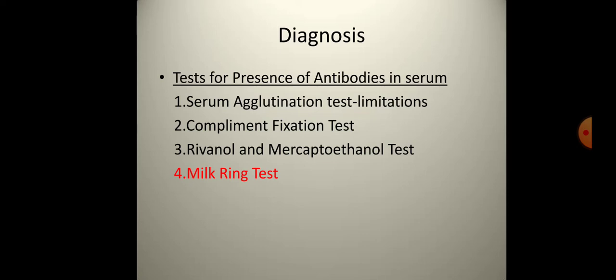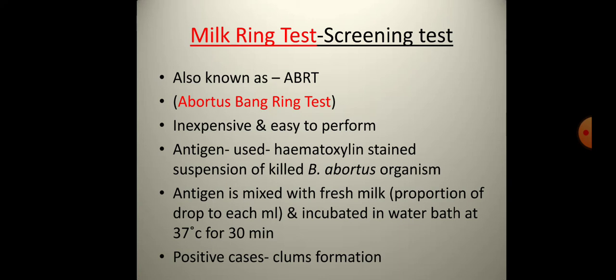One of the most famous tests is the milk ring test, also known as the Abortus Bang Ring (ABR) test, which is inexpensive and easy to perform. The antigen used is a haematoxylin-stained suspension of killed Brucella abortus organisms. The antigen is mixed with fresh milk at a proportion of one drop per milliliter and incubated in a water bath at 37 degrees Celsius for 30 minutes. In positive cases, clump formation is observed.